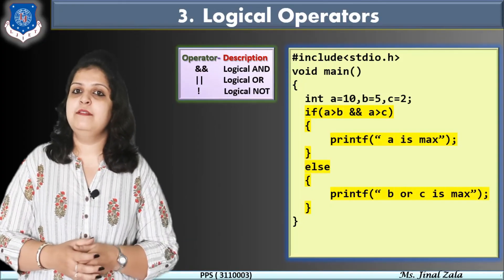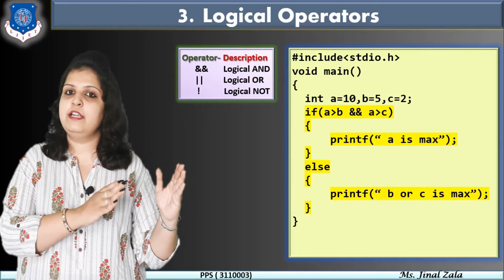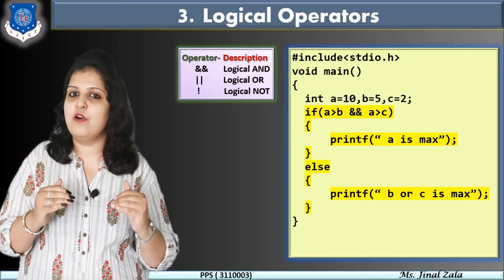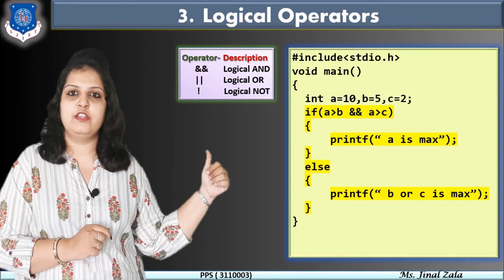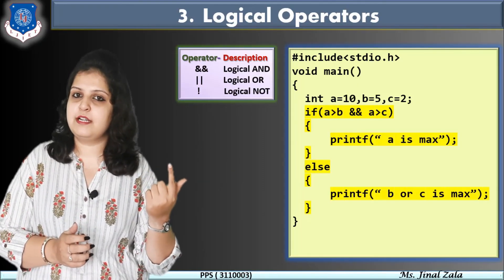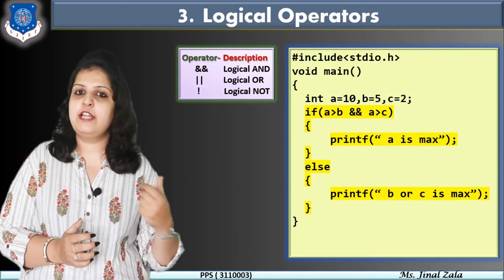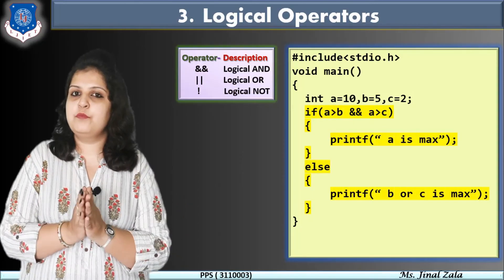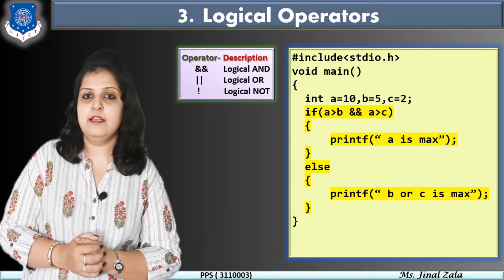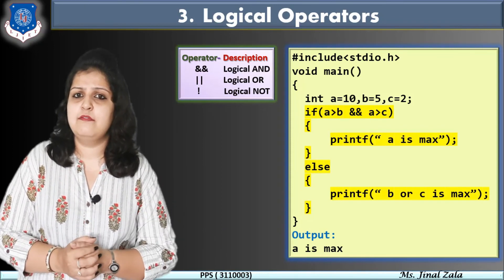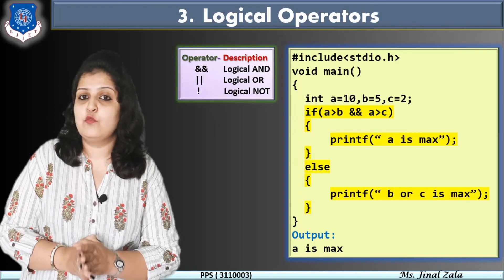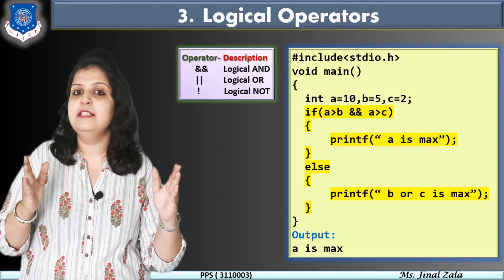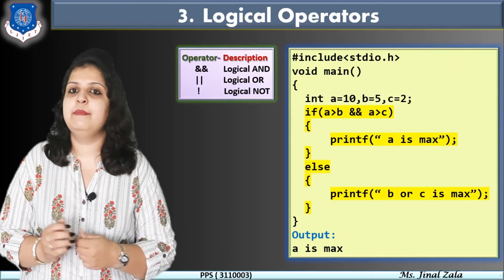Here is the condition: if (a > b && a > c), then printf("a is max"); else, b or c is max. How does it work? AND means multiplication. First condition a > b: 10 > 5 is true, so value is 1. Second condition a > c: 10 > 2 is true, so value is 1. Then 1 × 1 = 1, so our if part executes and output is "a is max". But if you change c to 12, then a > c becomes false, so we get 1 × 0 = 0 — the false part executes and output is "b or c is max".